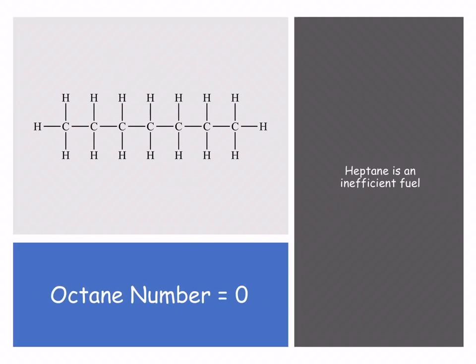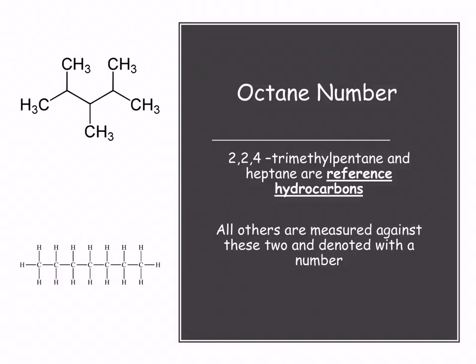These two compounds — heptane and 2,2,4-trimethylpentane — are our reference compounds. Zero represents the least efficient and 100 the most efficient. We compare our fuel and its performance on the scale between zero and 100; everything else is measured against these two and assigned a number between zero and 100.